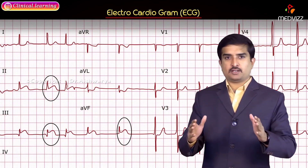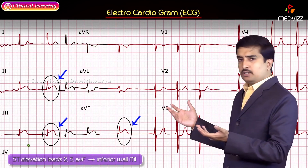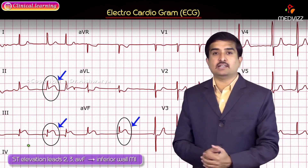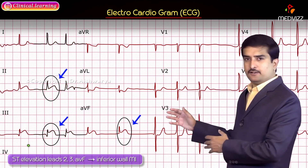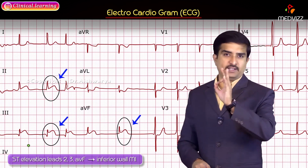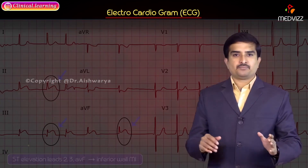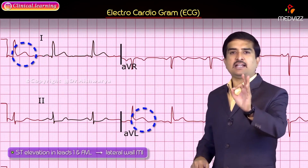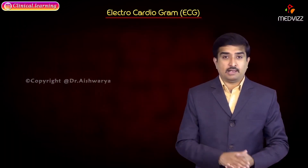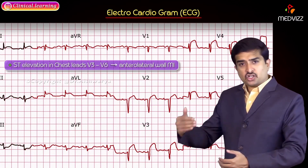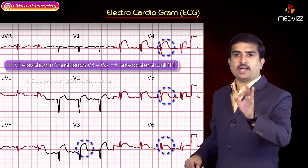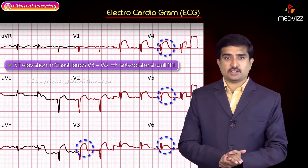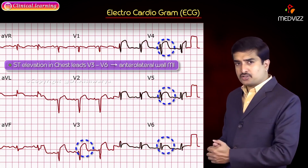Regarding ST elevation: ST elevation in leads 2, 3, and AVF is seen mainly in inferior wall myocardial infarction. ST elevation in leads 1 and AVL is seen mainly in lateral wall myocardial infarction. ST elevation in chest leads V3 to V6 refers to anterolateral wall MI. This is how ST elevation helps identify myocardial infarction at a specific location of the heart.